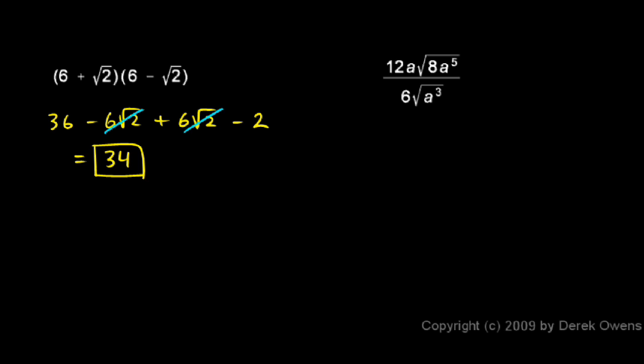In this next example, I have 12a times the square root of 8a^5 over 6 times the square root of a³. Well, immediately I can see this 12 and this 6 will cancel out, leaving me with a 2 there and just a 1 down at the bottom, which I can leave out. So I have 2a times the square root of 8a^5 over the square root of a³.